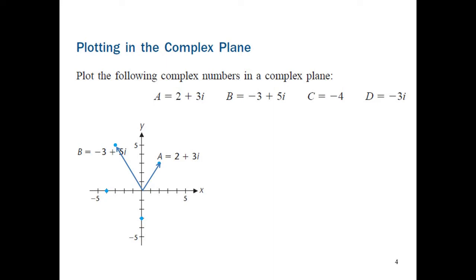The third is c equals negative 4. Having a negative 4 for x and 0 for y tells us that this complex number should be on the negative side of the x-axis — 4 units to the left from the origin. The fourth is d equals negative 3i. Having 0 for x and negative 3 for y tells us that this complex number should be on the negative side of the y-axis, 3 units downward from the origin.